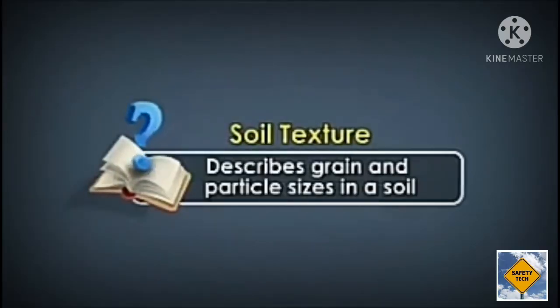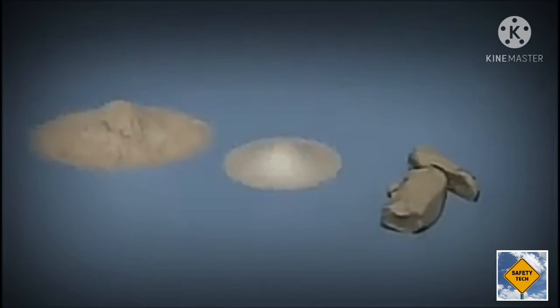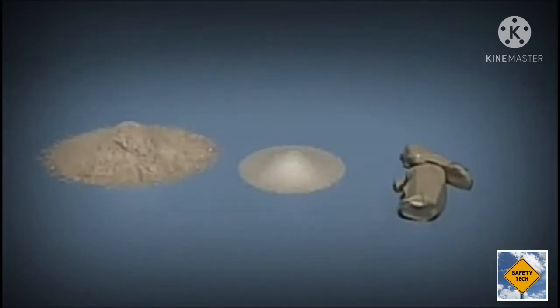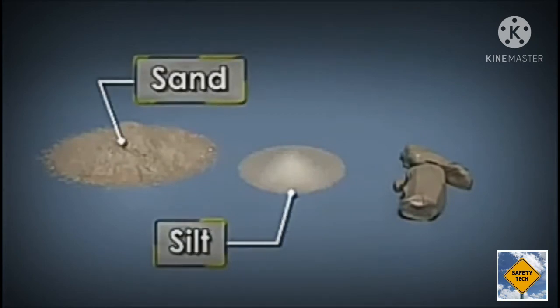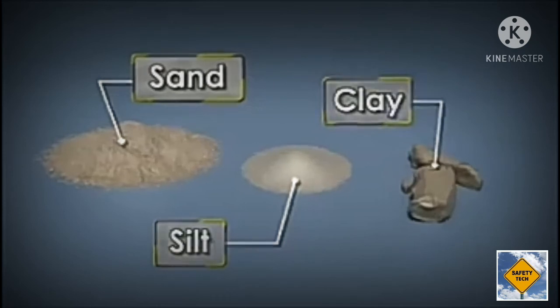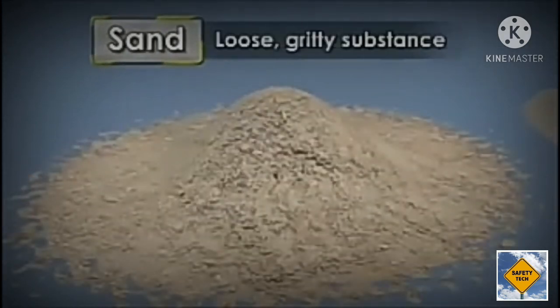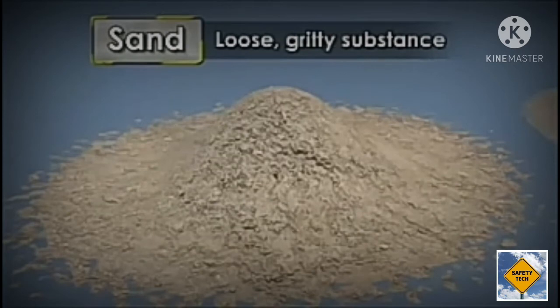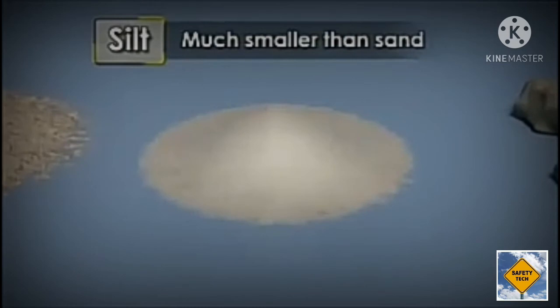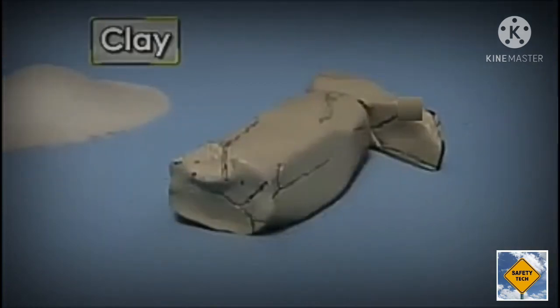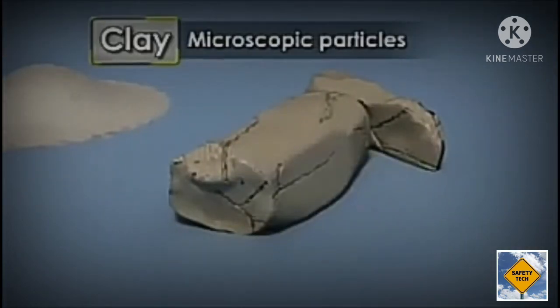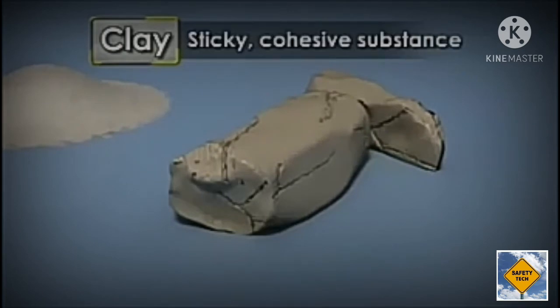Texture is how we describe the grain and particle sizes in a soil. Soil particles are grouped into what are called soil separates. The three soil separates are sand, silt, and clay. Sand is a loose, gritty substance and is the largest of the three particle sizes. Silt particles are much smaller than sand and form a smooth, fine substance. Clay is made up of microscopic particles that pack tightly together to form a sticky, cohesive substance.